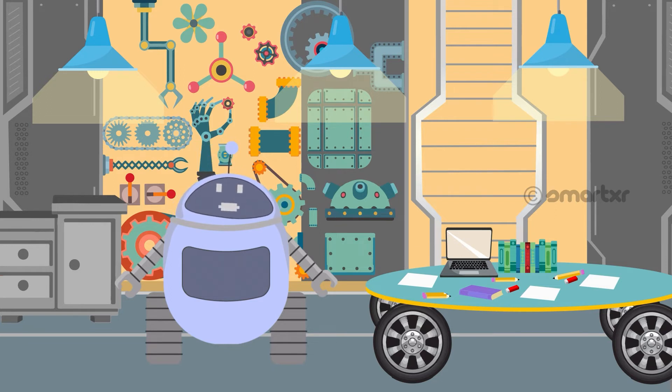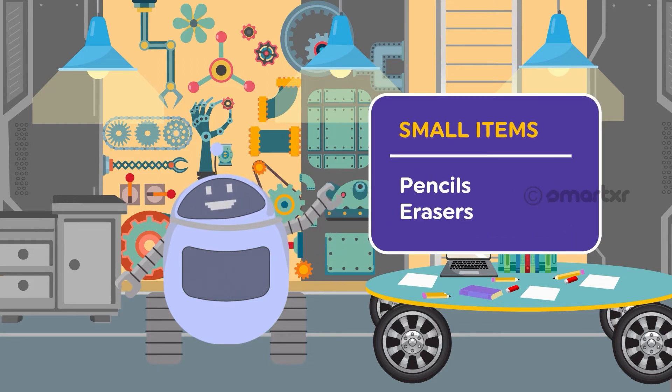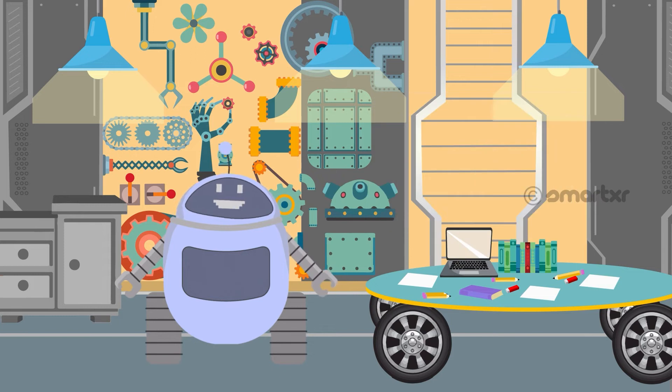I will make one for the smaller items. This is what my list looks like. How about you try and make the list for the bigger items?